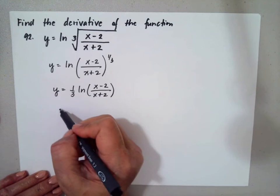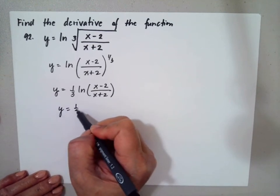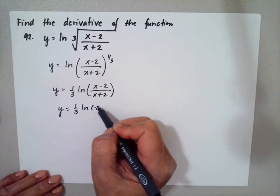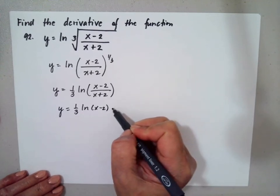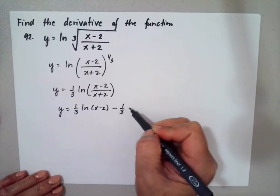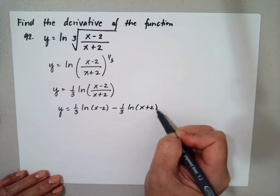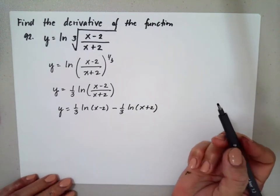Then this can be rewritten as 1 third ln of x minus 2 minus 1 third of ln of x plus 2 using the properties of natural logarithms.